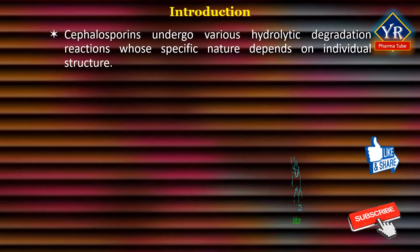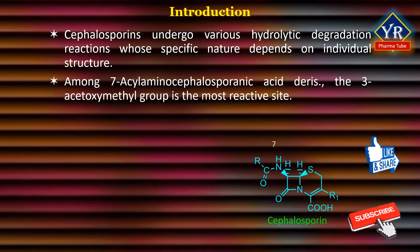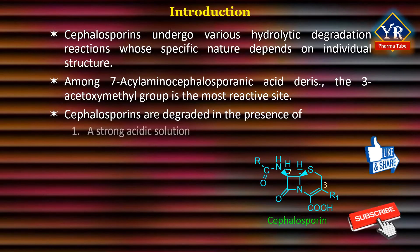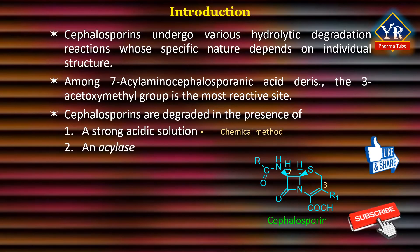Cephalosporins undergo various hydrolytic degradation reactions whose specific nature depends on the individual structure. Among 7-acylamino-cephalosporonic acid derivatives, the 3-acetoxymethyl group is the most reactive site. Cephalosporins are degraded in the presence of a strong acid solution, which is a chemical method, and in the presence of acylase and beta-lactamase enzymes, which are both enzymatic methods.